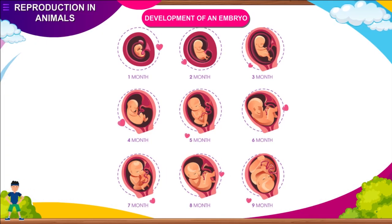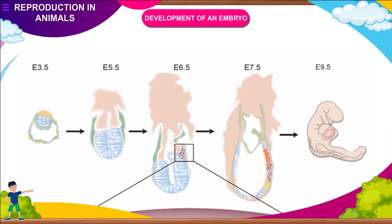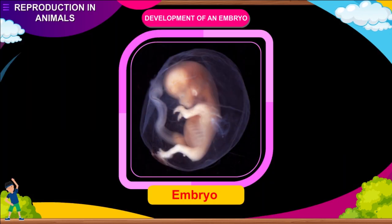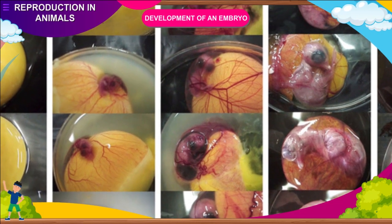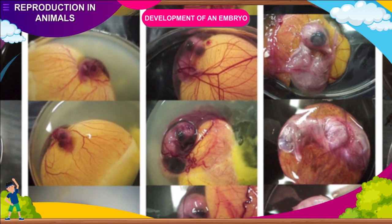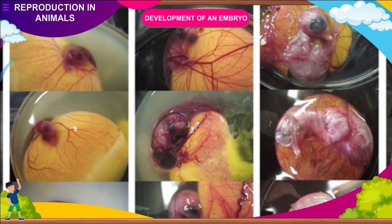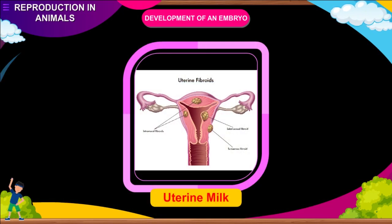Development of an Embryo: fertilization results in the formation of a zygote which begins to develop into an embryo. The zygote divides repeatedly and begins to form a group of cells which develop into different tissues and organs of the body. After reaching the uterus, the developing ovum remains in the uterine cavity for an additional 4 to 5 days before it implants in the endometrium, meaning implantation ordinarily occurs on the 7th or 8th day following ovulation. During this time, the ovum obtains its nutrition from endometrial secretions known as uterine milk.